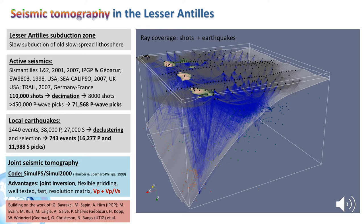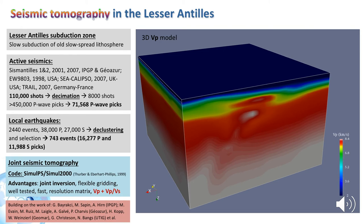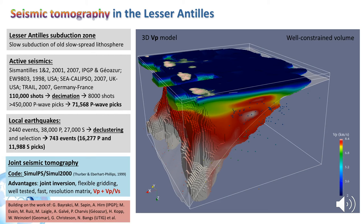My work relies on the joint effort of a large number of people, so I would like to thank the most important ones, including Gaier Bayrachski, Martin Sapan, Alfred Hearn, Adrian Kopp, Gail Christensen, and of course my co-authors, and others as well. This is the Vp cube, however not all of it is well sampled. So I've removed the areas that are not sampled by the data, and any interpretation will have to be restricted to this region.